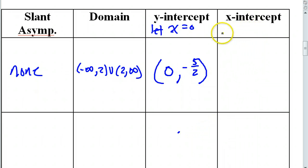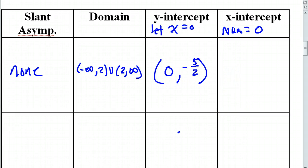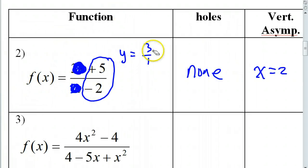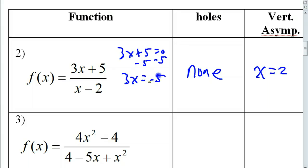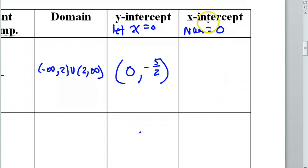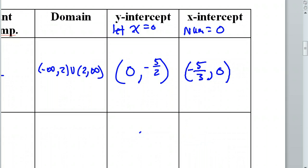How do I find the x-intercept? Setting the numerator equal to zero will find the x-intercept most of the time — the bottom equal to zero is how we find the vertical asymptotes. So I'm going to set this numerator equal to zero. If I set 3x plus five equal to zero, subtracting five gives me 3x equals negative five. Dividing by three gives x equals negative five over three. Because this is the x-intercept, I'll put it as the x-value, and the y-value will be zero: the point is negative five over three, comma, zero.